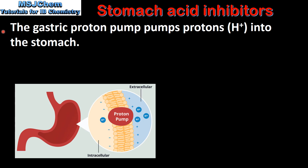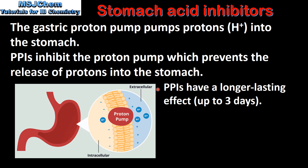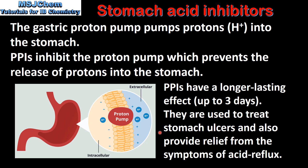Next we look in more detail at proton pump inhibitors. The gastric proton pump pumps protons into the stomach. As we can see in this diagram, the proton pump is responsible for secreting hydrogen ions into the gastric juice of the stomach. Proton pump inhibitors inhibit the proton pump, which prevents the release of protons into the stomach. Proton pump inhibitors have a longer lasting effect of up to 3 days. They are used to treat stomach ulcers and also provide relief from the symptoms of acid reflux.